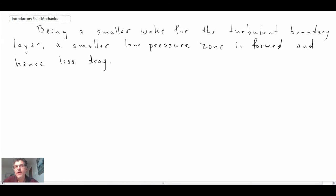We have less drag due to the fact that the boundary layer is energized when it is turbulent. This is the reason why golf balls have dimples in them. What the dimples do is they cause the boundary layer to transition.